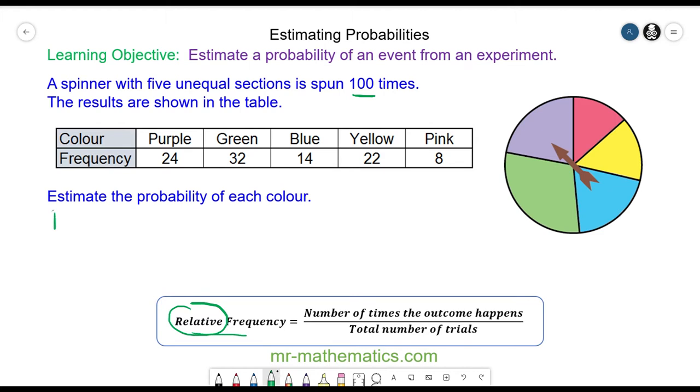We can estimate the probability of a purple section as 24, which is the number of times the outcome happens, divided by 100, which is the total number of trials. So this is 0.24.